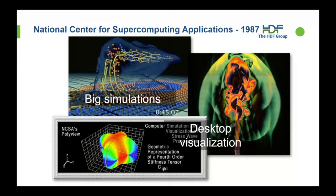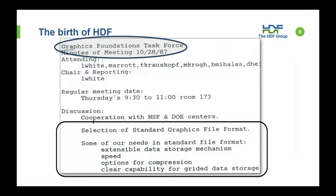So, who we are and where we came from: back in 1987, the National Center for Supercomputing Applications, NCSA, was getting started at the University of Illinois. They were there to provide supercomputing facilities for the academic community to run big simulations. Visualization was a big part of what they did, and there was a group that did desktop visualization. Among that group, there was a committee that called themselves the Graphics Foundation's Task Force.